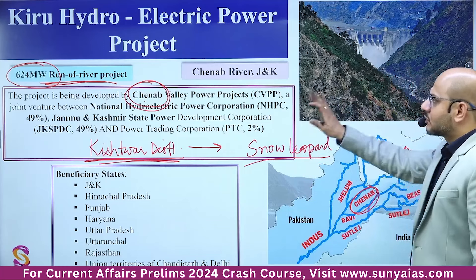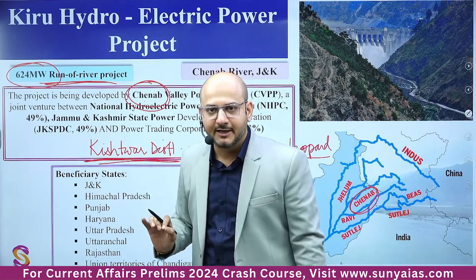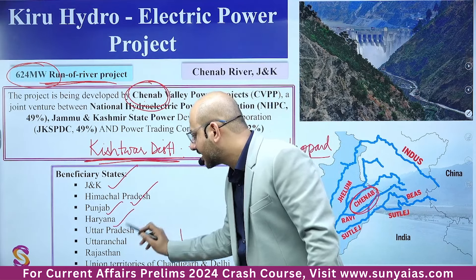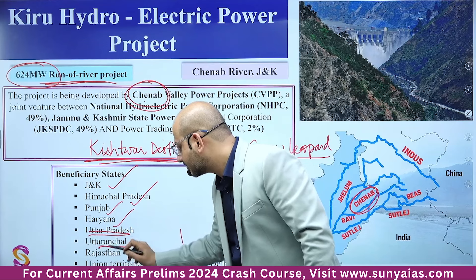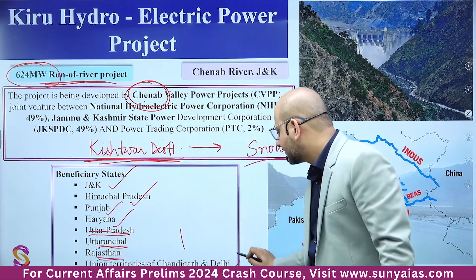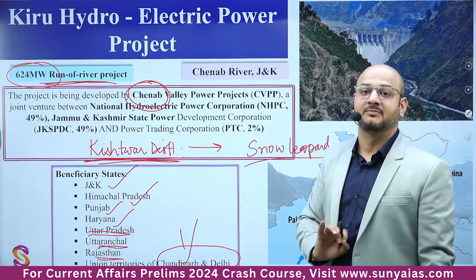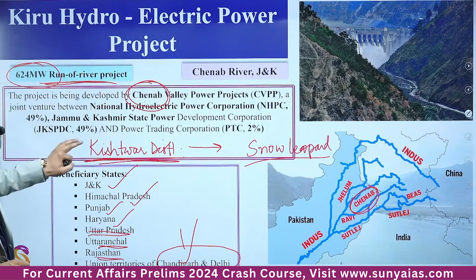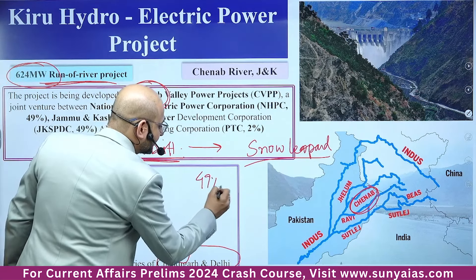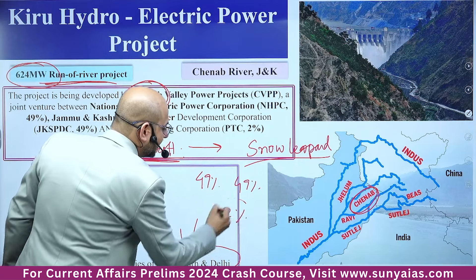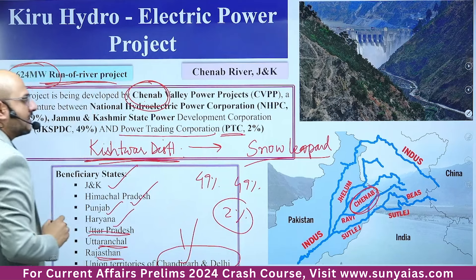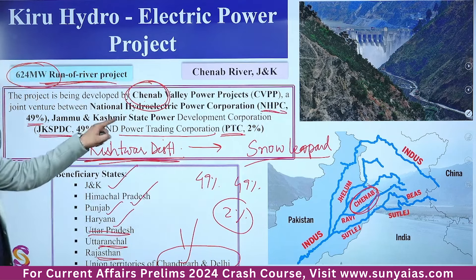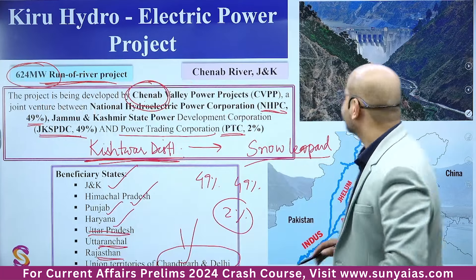This project will have more than 10,000 kilometers of catchment area. Beneficiary states include Jammu & Kashmir, Himachal Pradesh, Punjab, Haryana, Uttar Pradesh, Uttarakhand, Rajasthan, and union territories of Chandigarh and Delhi. For construction, 49% is for JK SPDC, 49% for NHPC (National Hydroelectric Power Corporation), and 2% for PTC — Power Trading Corporation.